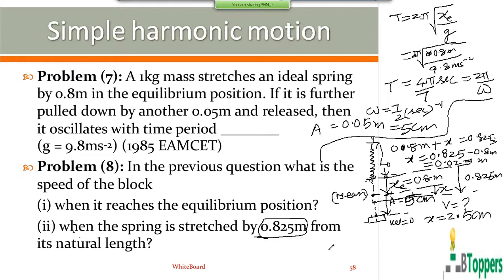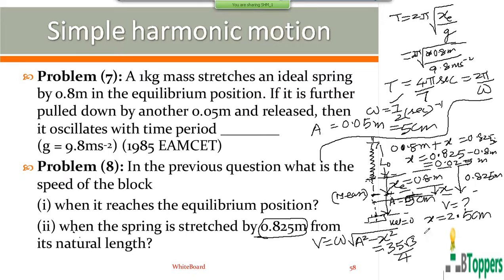You can use the equation v = ω√(A² − x²) for the magnitude of velocity of the block at displacement x from the equilibrium position. Substitute ω = 7/2 per second, amplitude A = 5 centimeters, and x = 2.5 centimeters. If you simplify this, you get the answer as 35√3/4 centimeters per second.